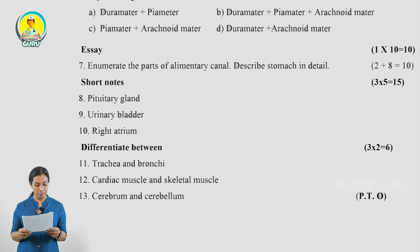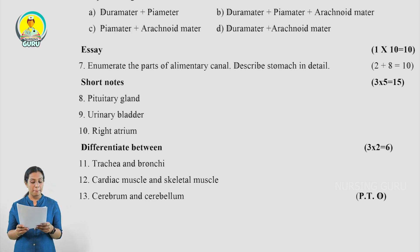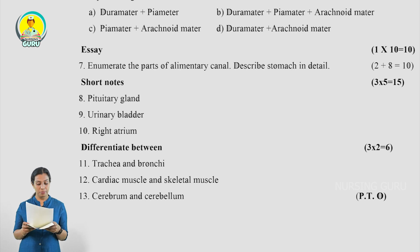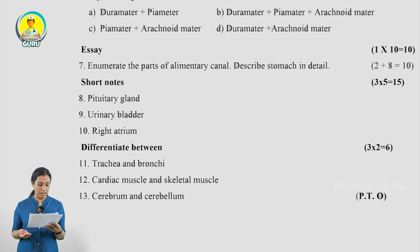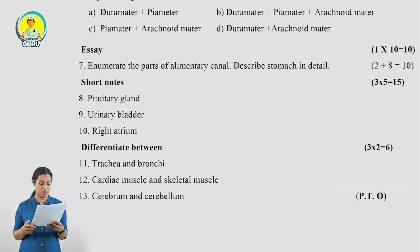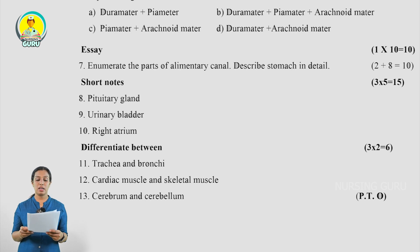The next type of question is Short Notes — 3 short notes, each carrying 5 marks, totaling 15 marks. The topics are: Pituitary Gland, Urinary Bladder, and Right Atrium. After that, the short answer type is 'Differentiate Between' — 3 questions, each carrying 2 marks, totaling 6 marks. The questions are: differentiate between Trachea and Bronchi (you may draw a diagram or write in table form), Cardiac Muscle and Skeletal Muscle, and Cerebrum and Cerebellum. Total maximum marks you can score in Section A is 37.